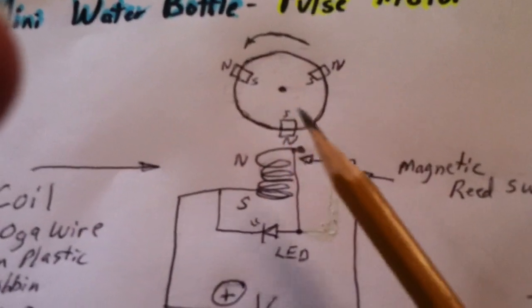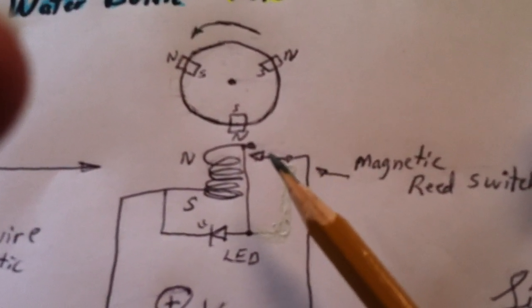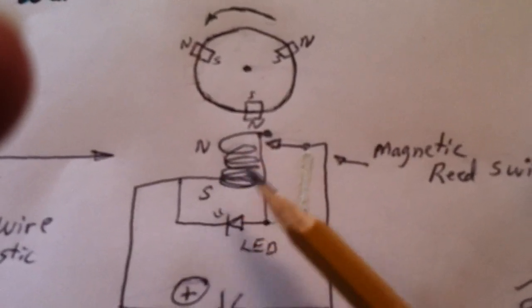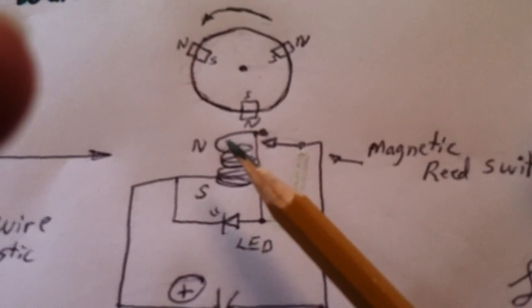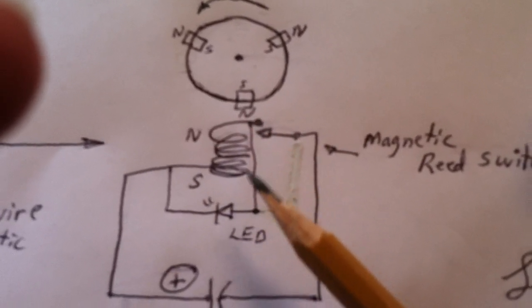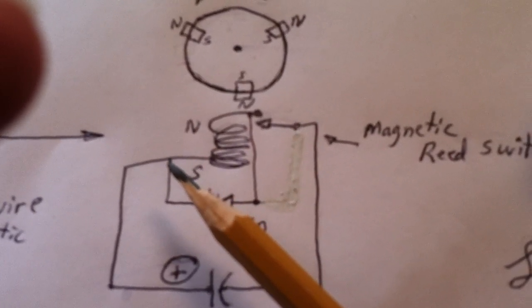And it rotates the rotor around. When this goes by here and passes, the reed switch opens up again, and the energy that's in that coil, the magnetic field collapses, and when it collapses, it shoots a spike of energy back through the LED this direction.